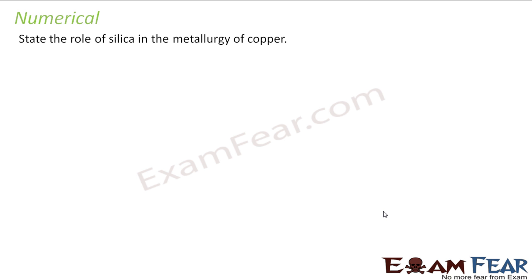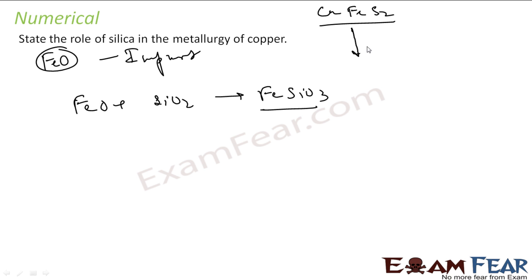Now I want to explain the role of silica in the metallurgy of copper. As I told, copper generally has FeO as impurity. To remove this, what we use is silica. FeO reacts with silica to get FeSiO3. Because the copper pyrite is generally CuFeS2, when you do roasting, what you get is Cu2S plus FeS plus SO2.